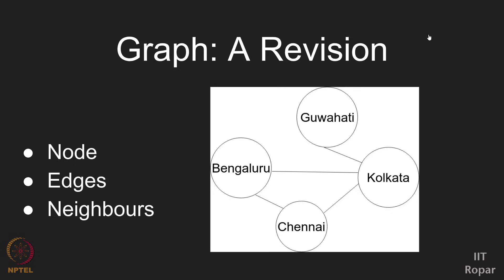We had seen a data structure called graphs when we had seen the concept of six degrees of separation. Using the Facebook dataset, we had analysed the distance between two people. We had taken a data structure called graph through which the Facebook friendship network is modelled. While explaining graphs, I had taken railway networks as an example. A graph is nothing but a set of points and lines — points are technically called nodes and lines are technically called edges. In this railway network, the cities or railway stations are the nodes.